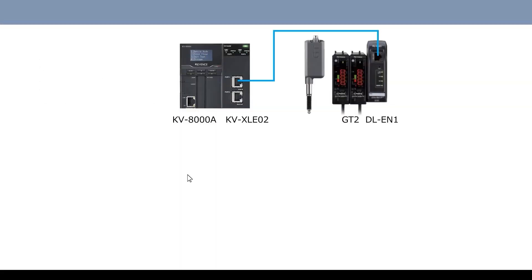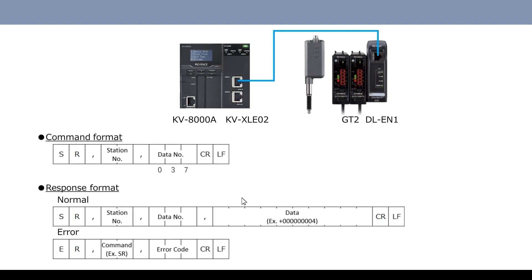Let's communicate with the communication unit called DLEN1 and read the PV value of GT2 series. The device configuration is as follows: KVXLE02 and DLEN1 are connected by LAN cable, and two GT2s are connected to DLEN1. Let's use the SR command to read the PV value. Specify the station number of the sensor amp to read and the data number of the data to read. The data number of PV value is 37.